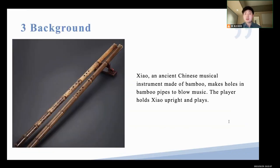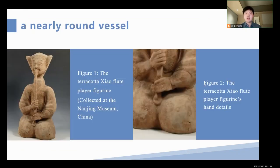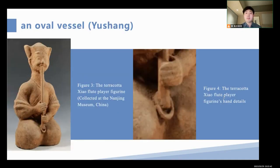Shell, an ancient Chinese music instrument made of bamboo, makes holes in bamboo pipes to blow music. The player holds the shell upright and plays. The figure on the left is the direct shell flute player figurine collected at the Nanjing Museum, China. The right picture is the direct shell flute player figurine's hand details. We could see a nearly round vessel at the bottom of the shell held by the direct shell flute player figurine. We could say the base of the shell is an oval vessel.